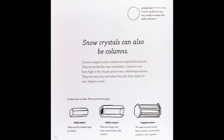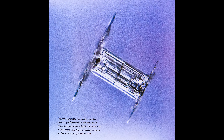A column has six sides. There are three types: solid columns, which are the smallest type; hollow columns, which are longer and more common than solid columns; and capped columns. The caps on each end of capped columns can be plate crystals or star crystals. Column crystals are very tiny — usually no longer than half a millimeter. Capped columns develop when a column crystal moves into a part of its cloud where the temperature is right for plates or stars to grow at the ends. The two end caps can grow to different sizes.